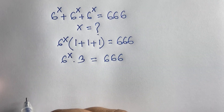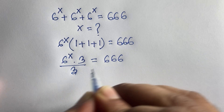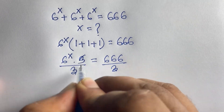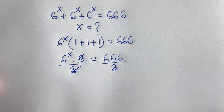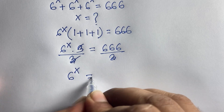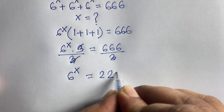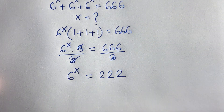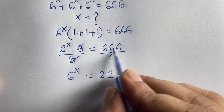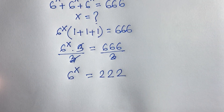Now if I divide both sides by 3, the 3 cancels and we find that 6 to the power x is equal to 222, because we divided 666 by 3.